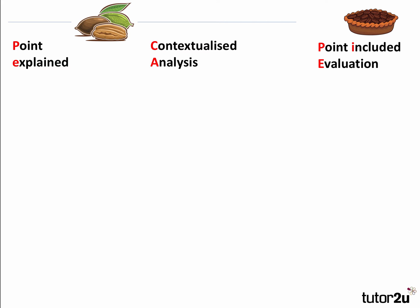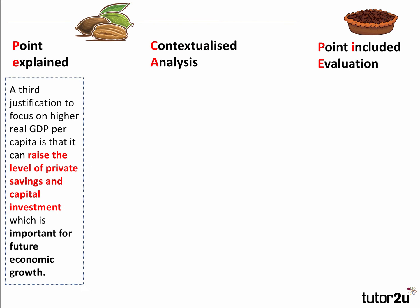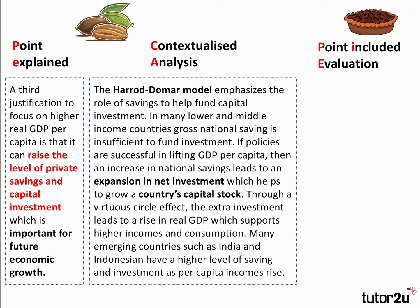Third point: a high GDP per capita can raise the level of private savings and investment, which is important for future economic growth. Using the Harrod-Domar model, which emphasises the role of savings in funding investment: in many lower- and middle-income countries, gross national savings are insufficient to fund investment. If policies successfully lift GDP per capita, increased savings lead to an expansion of investment, growing a country's capital stock. The virtuous circle continues — extra investment raises real GDP, supporting further increases in incomes and consumption. India and Indonesia are cited as examples of high saving and investment as per capita incomes rise.